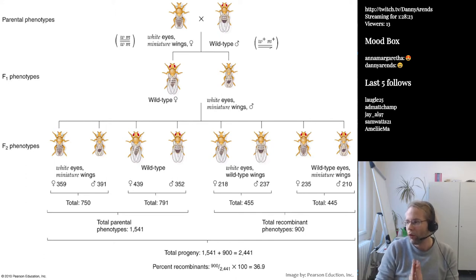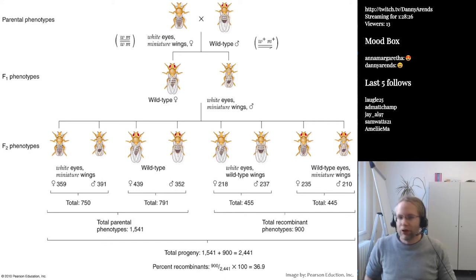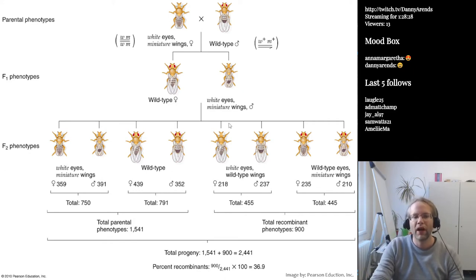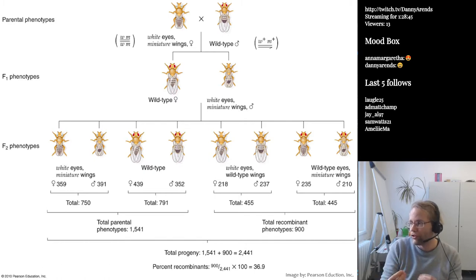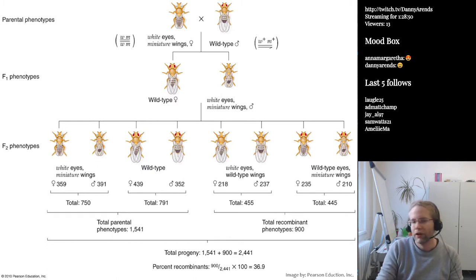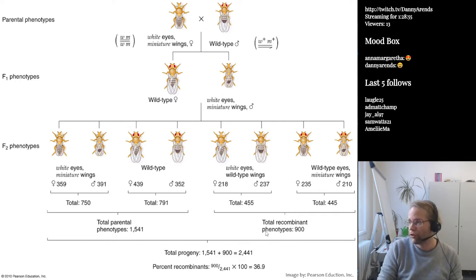Now we can start counting. We can define whether animals look like the parents — these look like the father and these look like the mother, so we call them parental phenotypes. We also have animals which have one feature of one parent and a feature of the other, so they have recombined — we define these as the recombinant phenotypes. We classify them based on their phenotype.